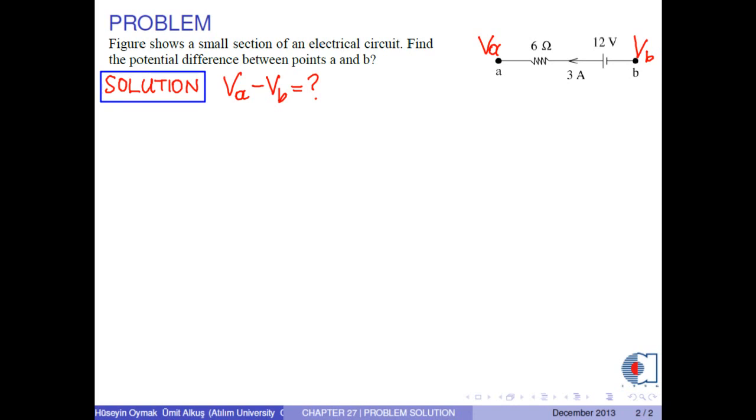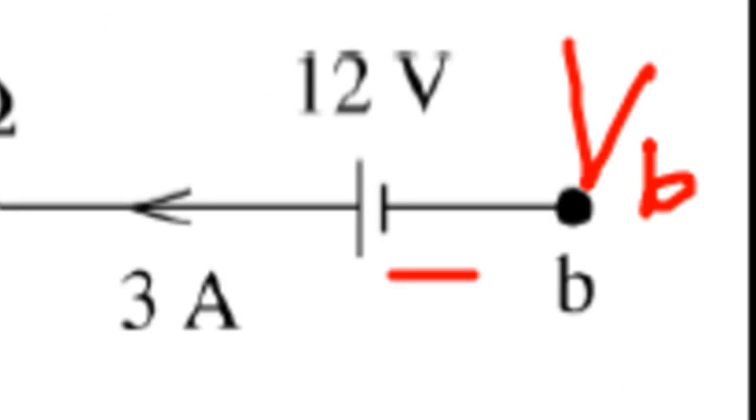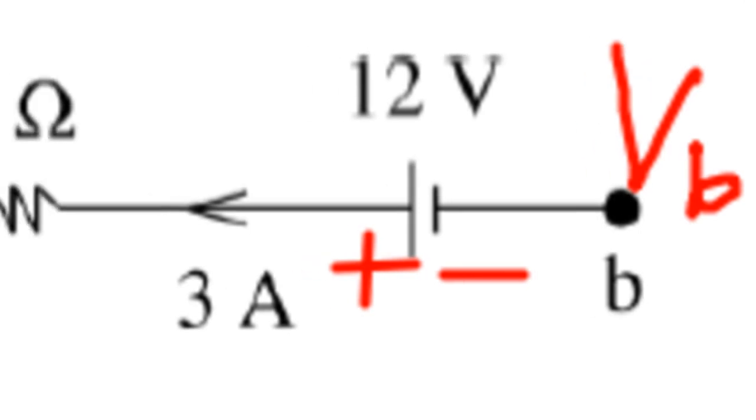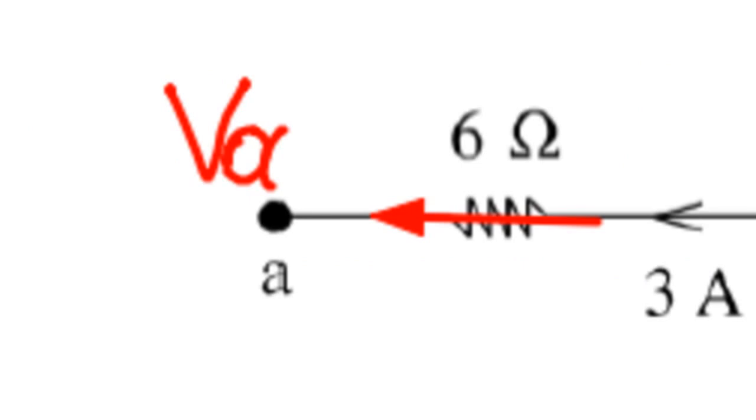First, we label the polarities of the battery and the resistor. For the battery, short line is negative and long one is positive. For the resistor, because the current flows to the left and it flows from high potential to low potential, we have plus sign here, negative sign here.